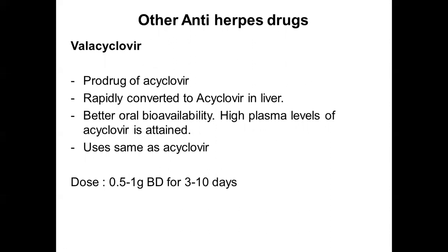The other anti-herpes drug is valacyclovir. It is the pro-drug of acyclovir and gets rapidly converted to acyclovir in the liver. The advantage is better oral bioavailability, and high plasma levels of acyclovir can be attained by using valacyclovir, whereas using acyclovir directly does not achieve such high concentrations. The indications are the same. The dose is 0.5 to 1 gram twice a day for 3 to 10 days.